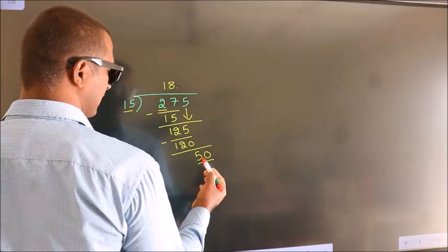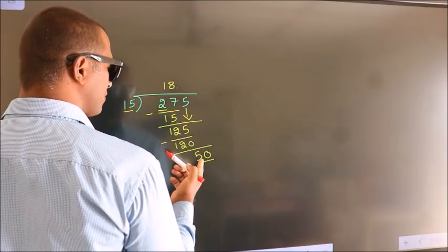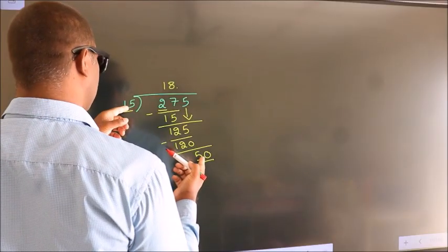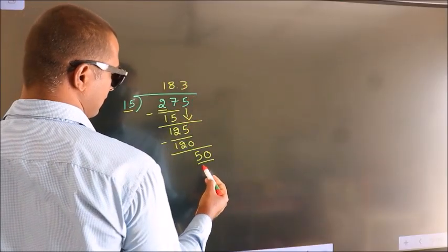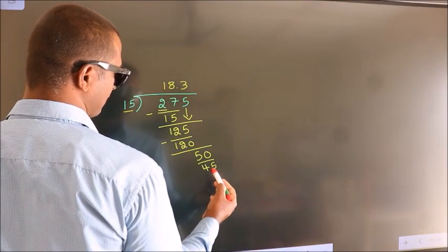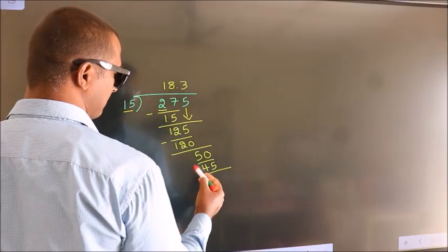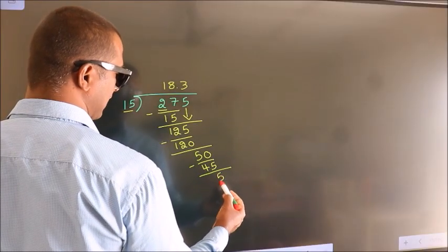So 50. A number close to 50 in the 15 table is 15 threes, 45. Now we subtract and get 5.